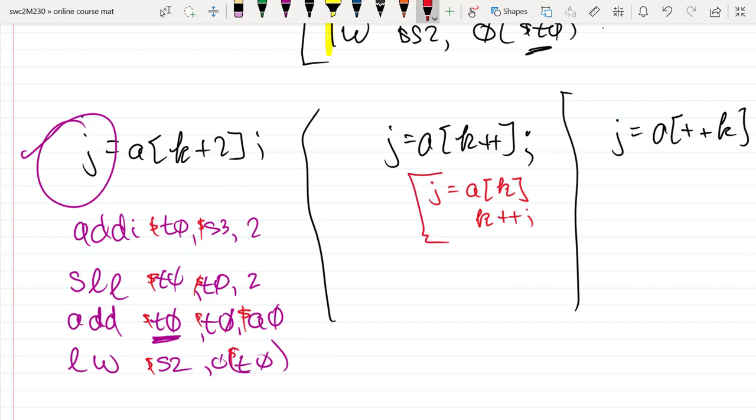Now how does that differ from what's over here? I'm going to increment k first in this instance and then use that incremented value of k.